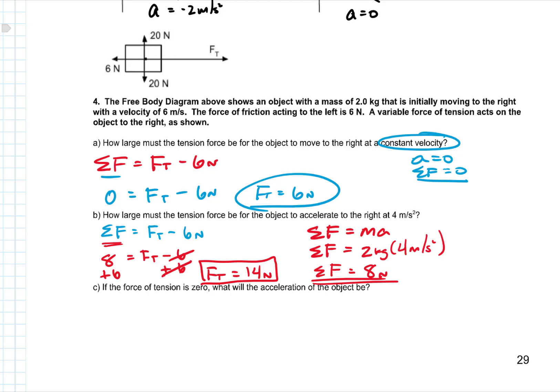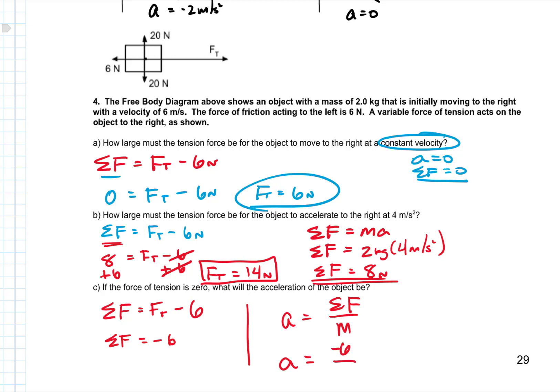If tension is zero, what will the acceleration be? Using the same net force equation: net force equals tension minus 6, so net force equals 0 minus 6, which is negative 6 newtons. Acceleration equals net force over mass: negative 6 divided by 2 equals negative 3 meters per second squared.